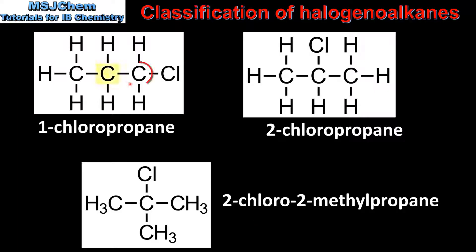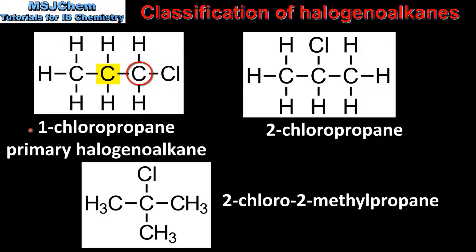If we look at the structure of 1-chloropropane we can see there is one carbon atom that is directly bonded to the carbon atom that is bonded to the halogen atom. Therefore 1-chloropropane is a primary haloalkane.